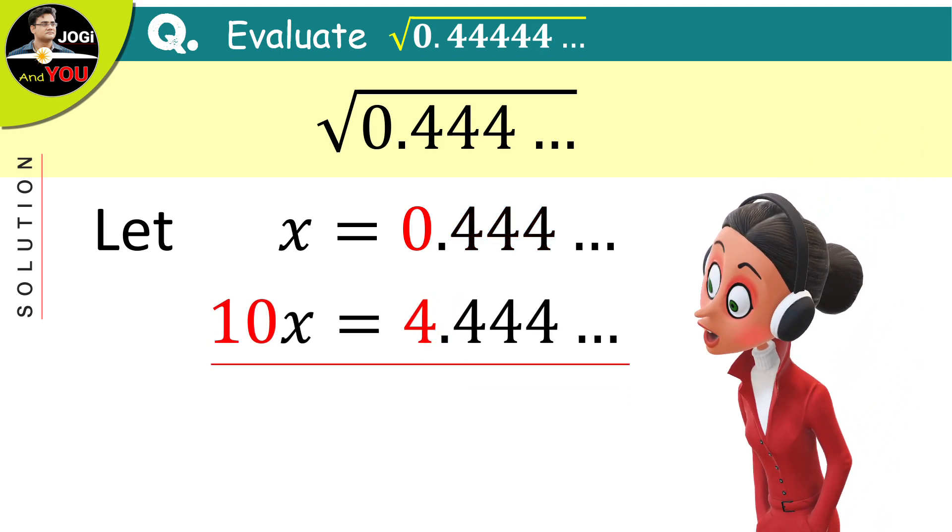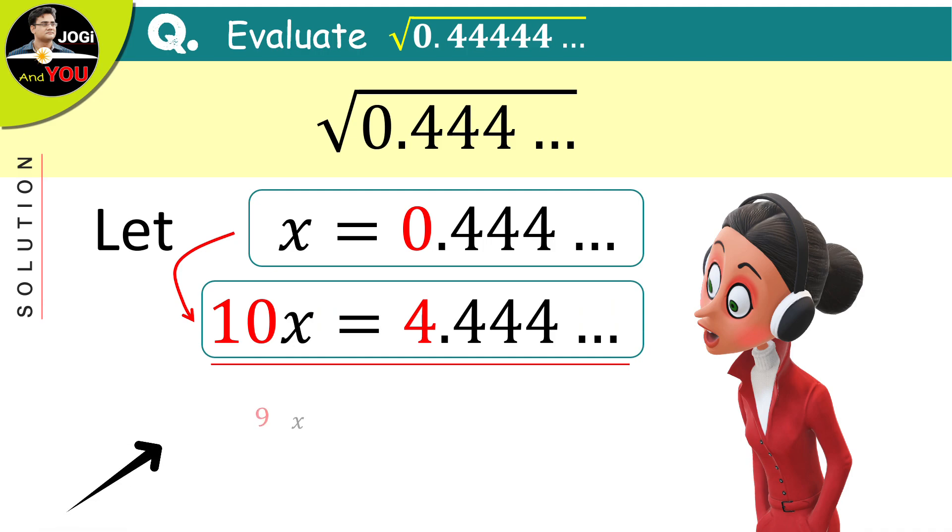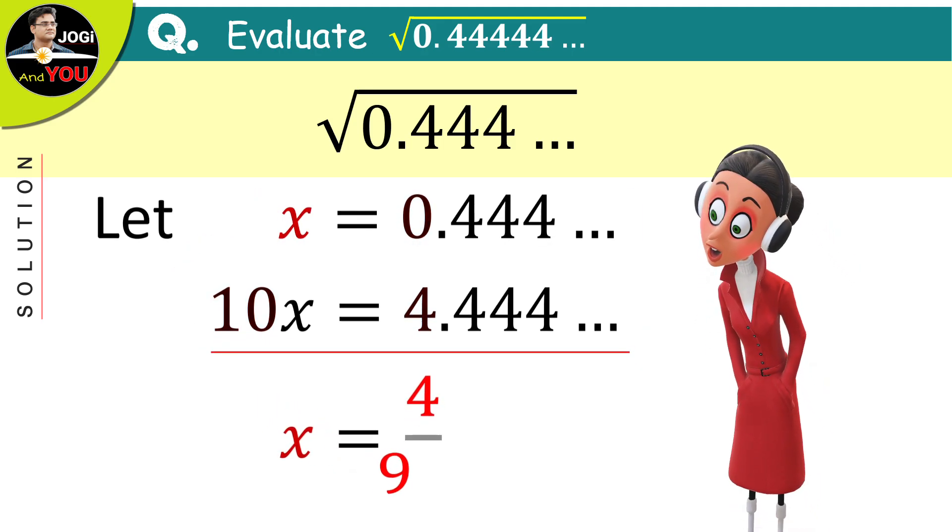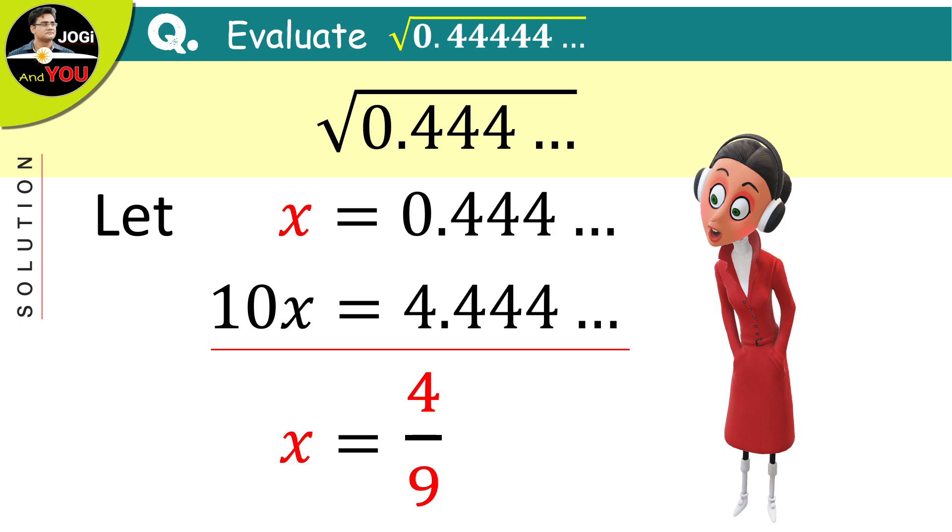Now, we will subtract this first equation from the second equation. After subtracting, we get 10x minus x which means 9x and this is equal to 4 from the right side. Just transfer this 9 to the right side and we get x is equal to 4 over 9.